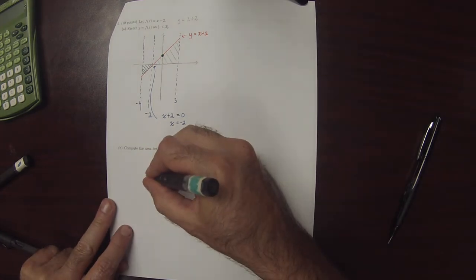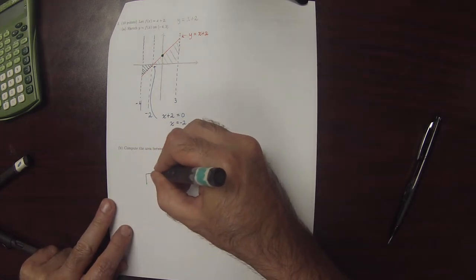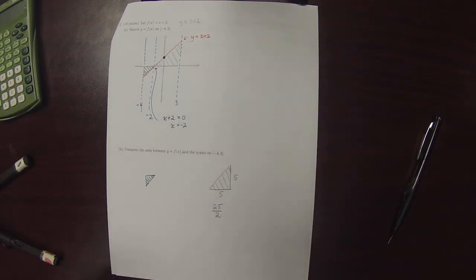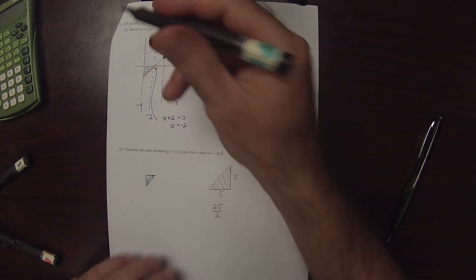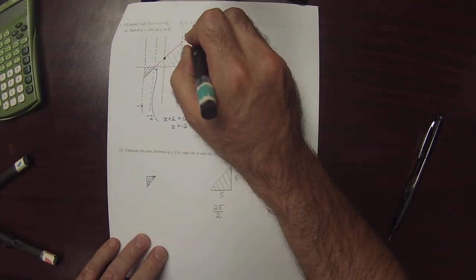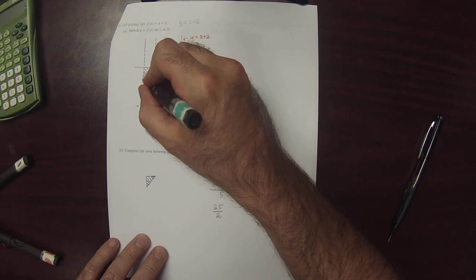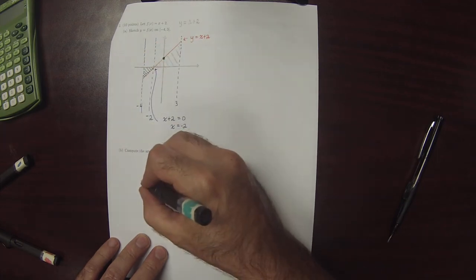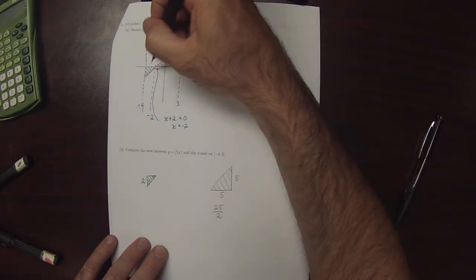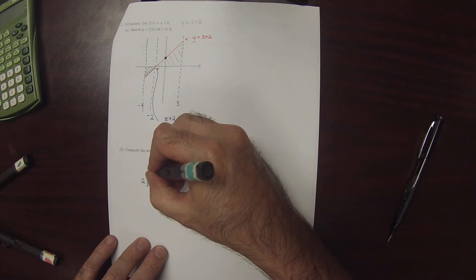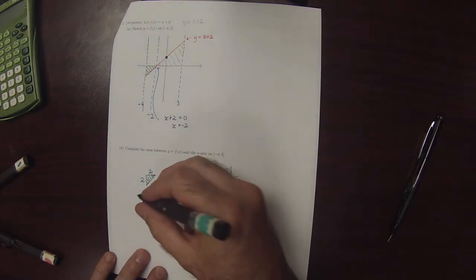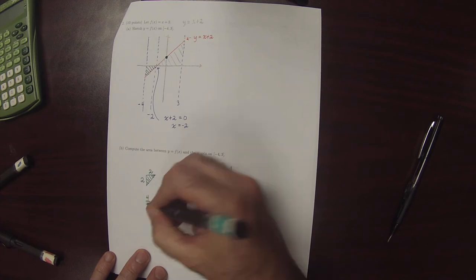The green triangle. If you plug in negative 4 to x plus 2, you get that this is negative 2. So that means that this measurement is 2 in absolute value. And then this base is also 2. So the area of this triangle is base times height over 2, which is 4 over 2.